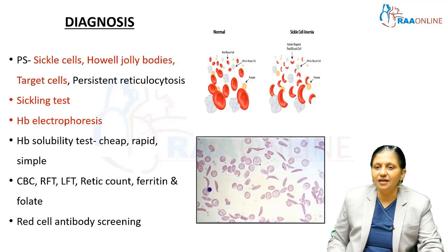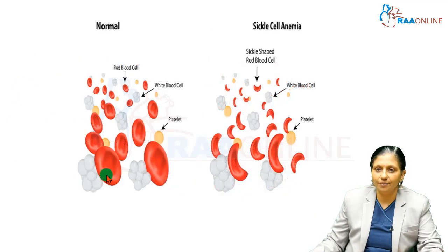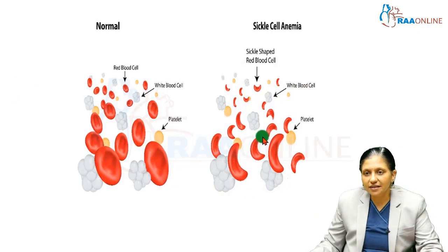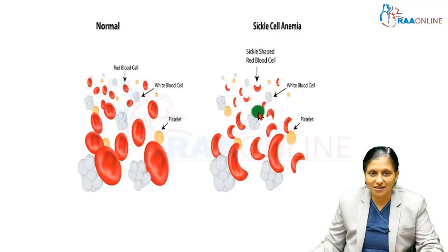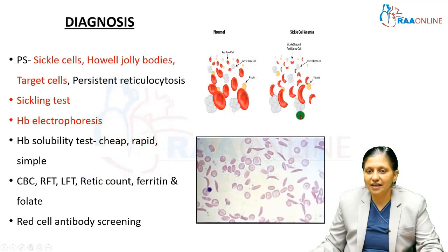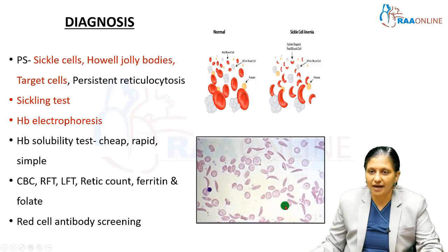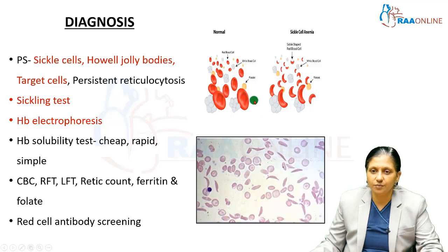On peripheral smear, normal RBCs are seen alongside sickle-shaped cells. In sickle cell anemia we also see Howell-Jolly bodies, target cells, and persistent reticulocytosis. The diagnosis is made by identifying these findings, and in patients with a normal smear, sodium metabisulfite can be added to induce sickling.